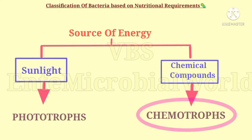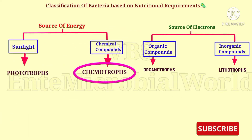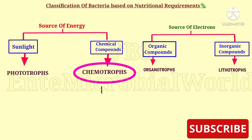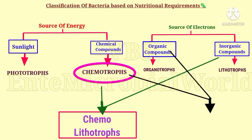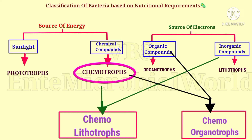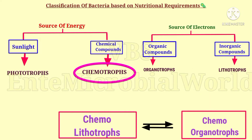Next we are going to see about chemotrophs. Some chemotrophic bacteria can use inorganic compounds as their source of electrons and are termed chemolithotrophs. Some chemotrophic bacteria can use organic compounds as electron donors and are called chemoorganotrophs. Some bacteria can grow as either chemolithotrophs or chemoorganotrophs.